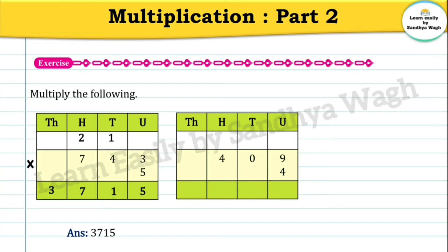Next, 409 multiplied by 4. Units place: four 9s are 36, write 6 and carry 3. Tens place: four 0s are 0, plus 3 carry is 3, write 3. Hundreds place: four 4s are 16, write 6 in the hundreds place and carry 1 to the thousands place.